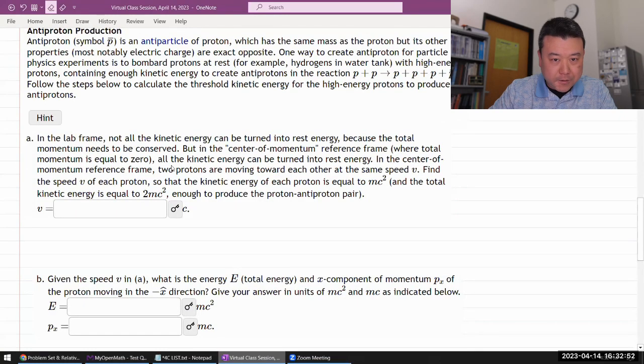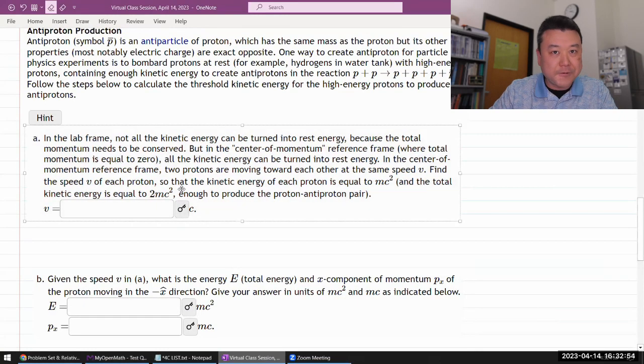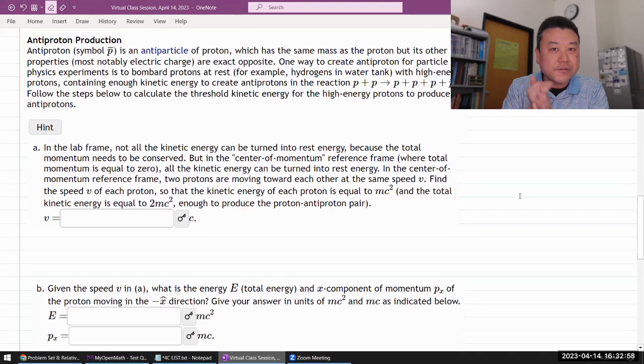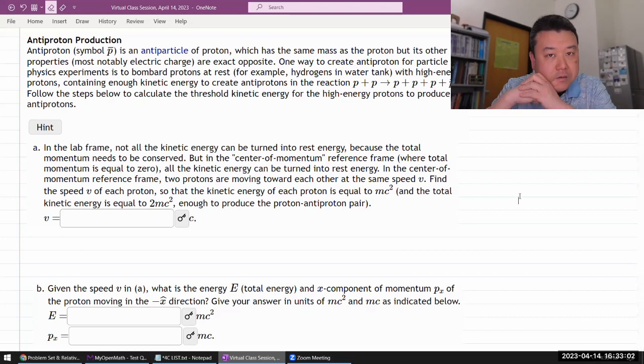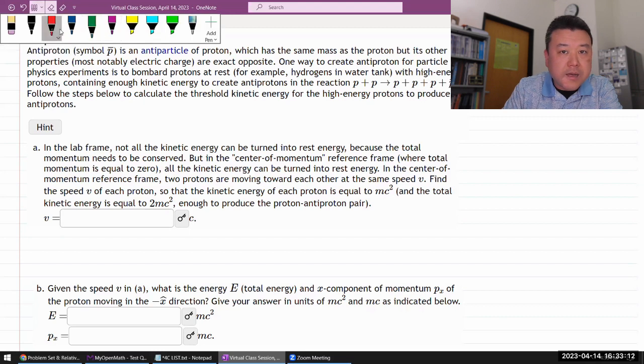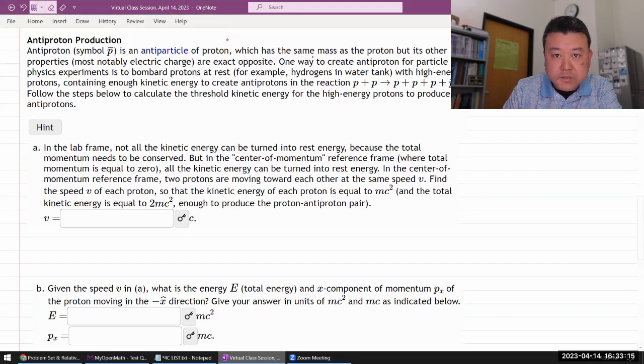Alright, so this is a pretty long question. Let me start by reading it and see what I can do. So it says antiproton is an antiparticle of proton which has the same mass as proton. Let me just assume that they want me to use the symbol M for mass, so we'll just be using mass M.